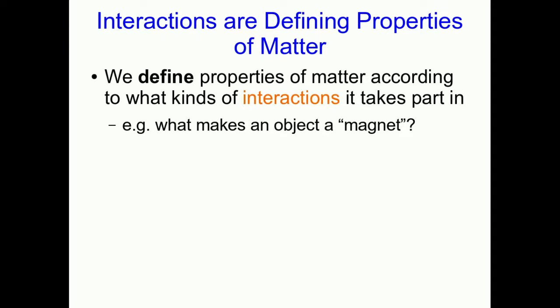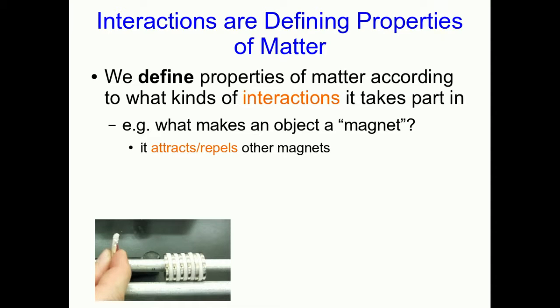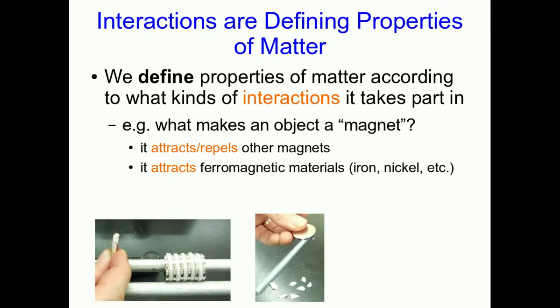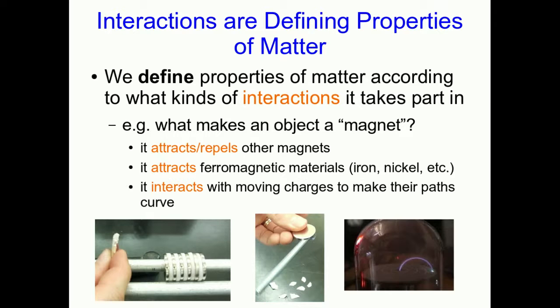For example, think about a simple question like what makes an object a magnet? Well, if you have some object and you want to know whether it's a magnet, there are tests you carry out to find out. Does it attract and repel other magnets? Does it attract ferromagnetic materials like iron and nickel? And perhaps less obvious to you, does it interact with moving charges to make their paths curve? But notice, all of these tests are looking at what sorts of interactions the object that you think might or might not be a magnet participate in. And so it's the participation in those interactions that defines the thing as a magnet.